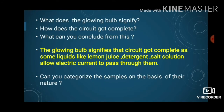Now let us analyze the observations. What does the glowing bulb signify? The glowing bulb signifies that the circuit got completed — and the circuit got completed only because current was flowing through the liquid. The liquid allowed electric current to pass through it. We can conclude that the glowing bulb signifies that certain liquids like lemon juice, detergent solution, and salt solution allow electric current to pass through them.